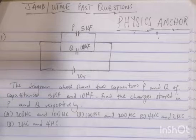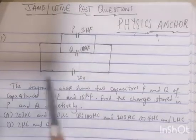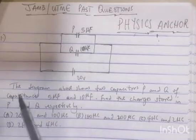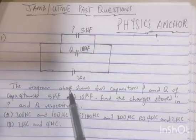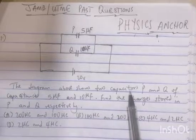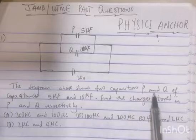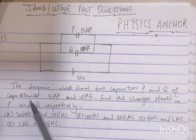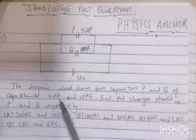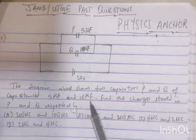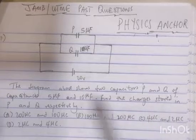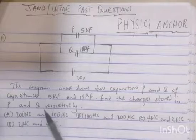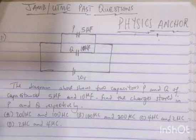Question number one is right here. We have this connection, and the question says: the diagram above shows two capacitors P and Q of capacitances 5 microfarad and 10 microfarad. Find the charges stored in P and Q respectively.